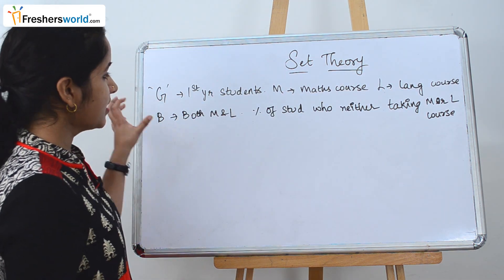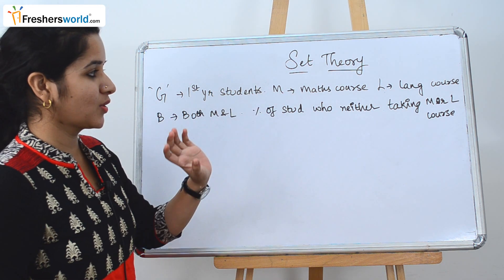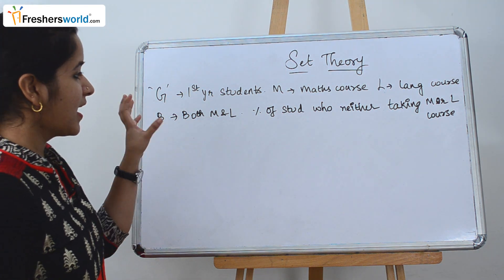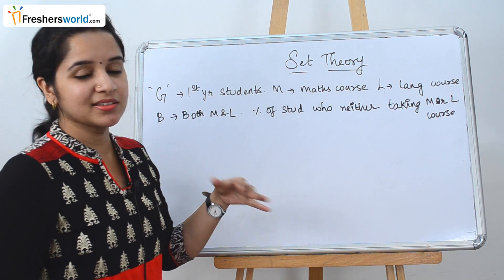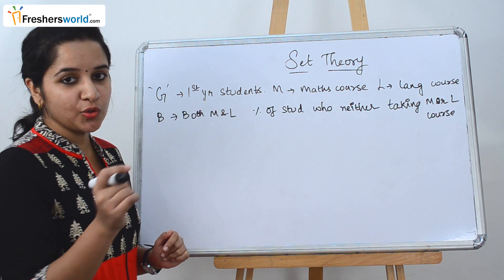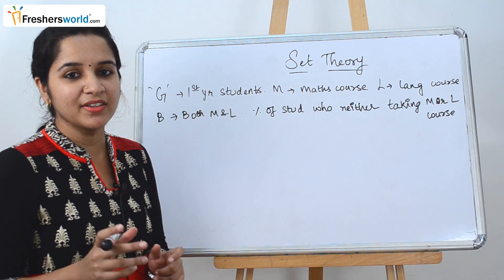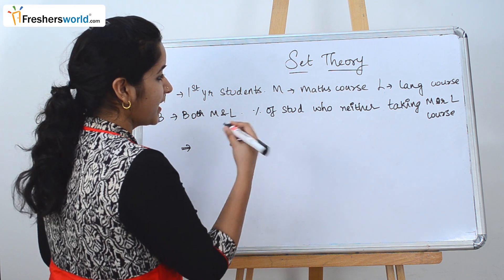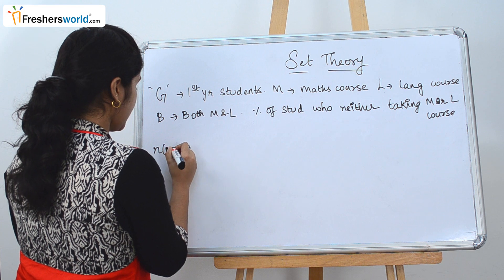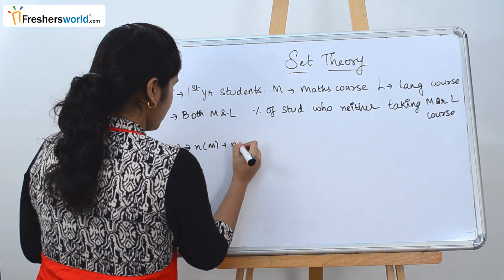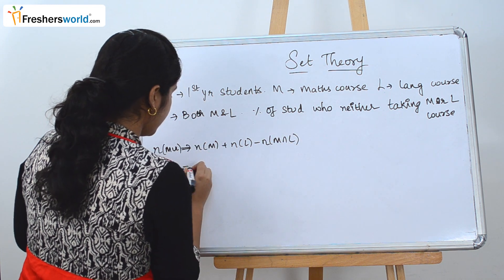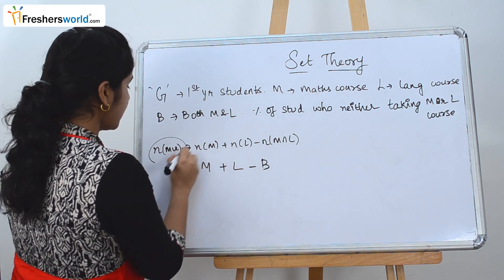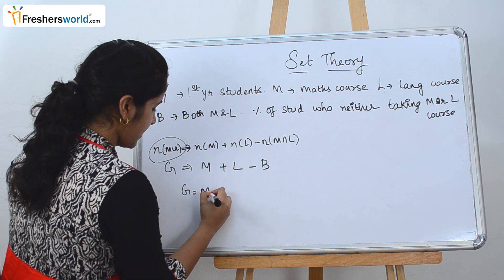The next question: there are G number of first-year students. M is the number of students who took the maths course, L is the number who took the language course, and B is the number who took both maths and language. No numeric values are given — the answer will be an equation. The number who like either course is: N(M ∪ L) = M + L − B.